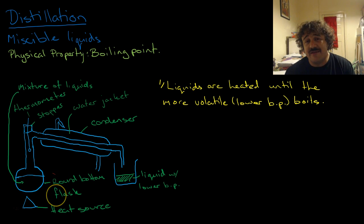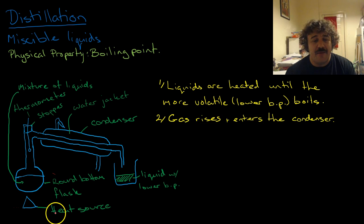Liquids are heated until the more volatile—this means lower boiling point—boils. The gas rises. We've got two mixtures in here. The lower boiling point rises up, so it's more volatile.